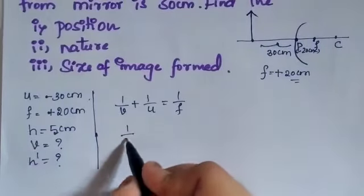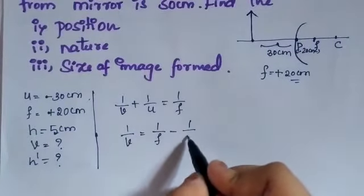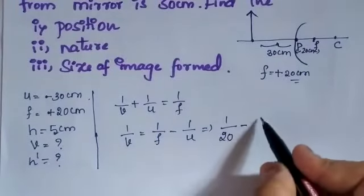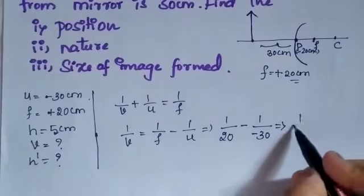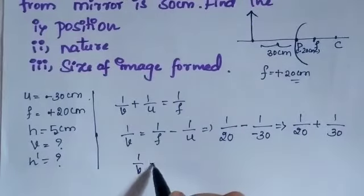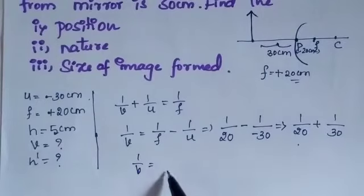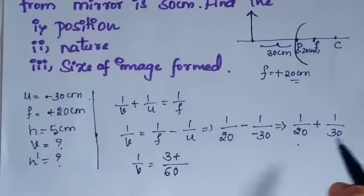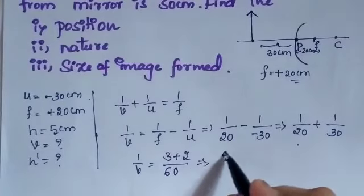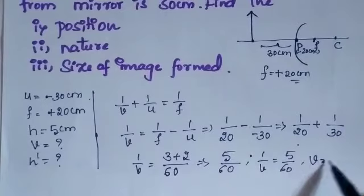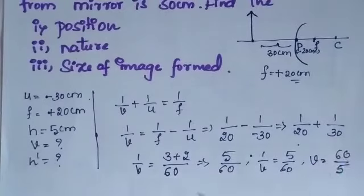Rearranging, 1/V = 1/F − 1/U. So 1/V = 1/20 − 1/(−30) = 1/20 + 1/30. The LCM of 20 and 30 is 60, giving 3/60 + 2/60 = 5/60. Therefore V = 60/5 = +12 cm.